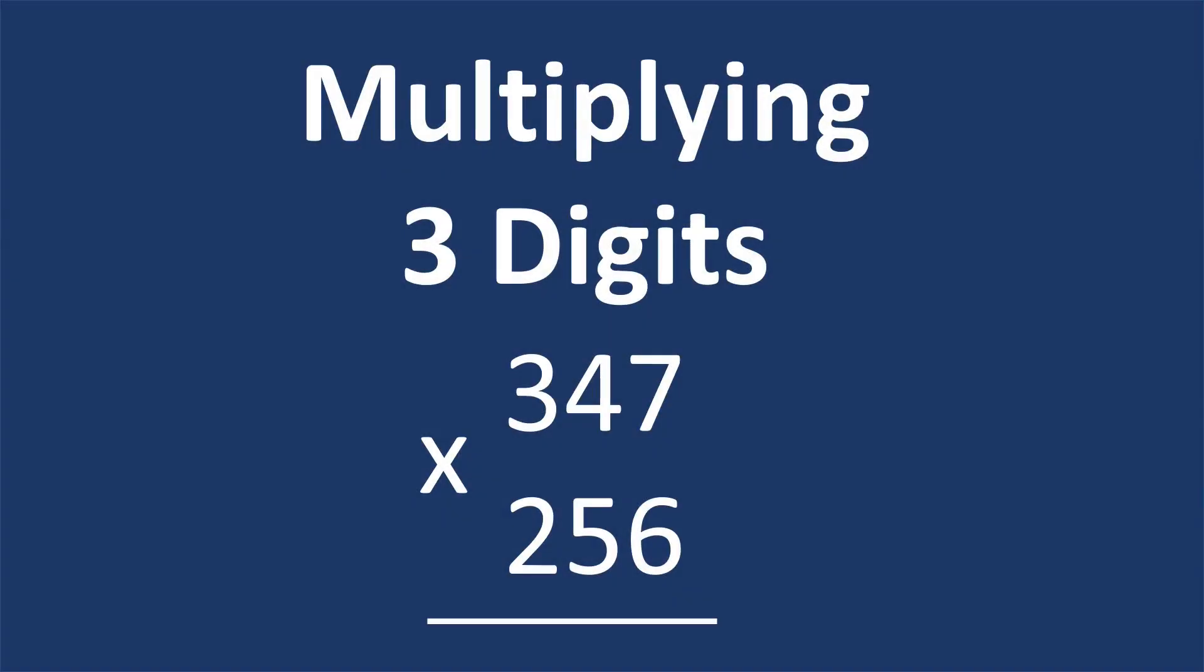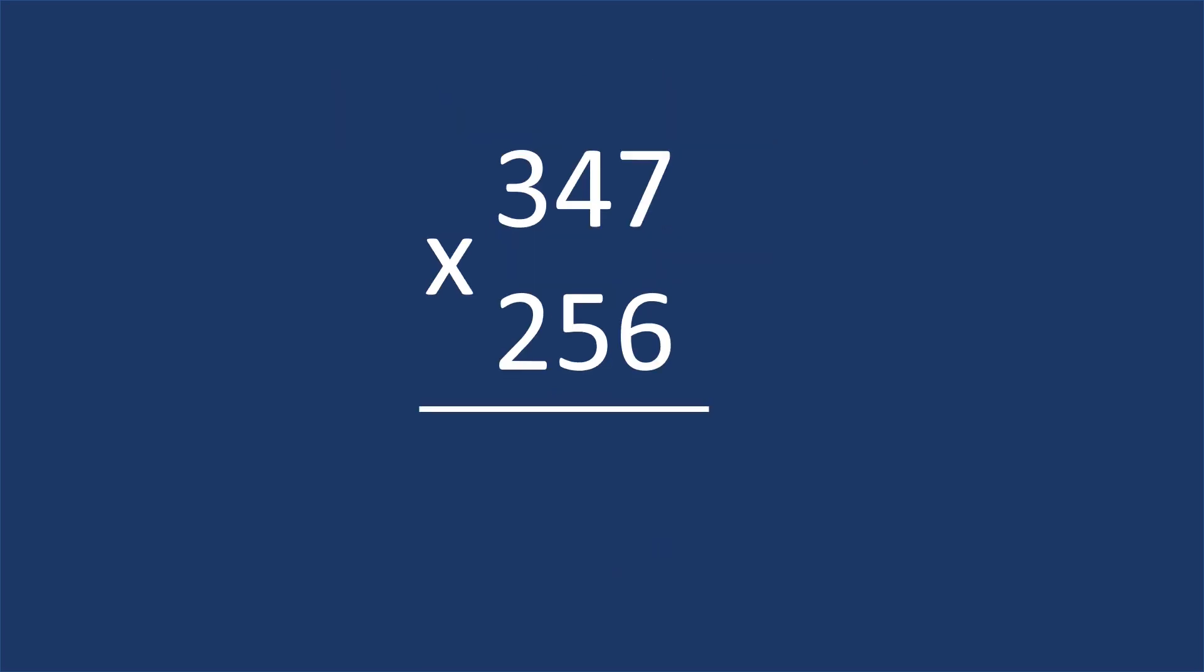In this video, we're going to talk about how to multiply three-digit numbers. So here we have 347 times 256. The process we're going to use is we're going to start with this 6. First multiply it by the 7, then multiply it by the 4, then multiply it by the 3.